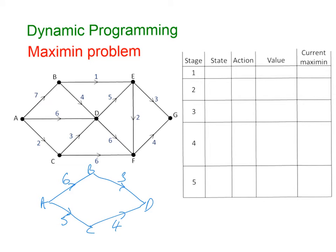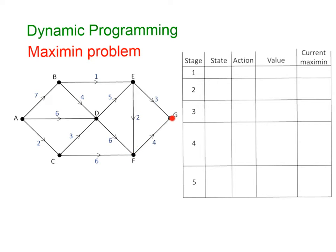We're going to apply this idea to a slightly more complicated network, and we'll also look at how we can use a table to present our solutions. The first thing we need to do is decide which stage each vertex belongs to. Looking at F first, you can see from F there's only one way of getting to G — just one transition. So F is at stage 1.